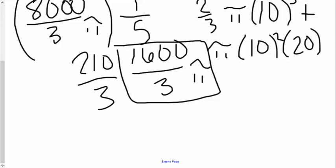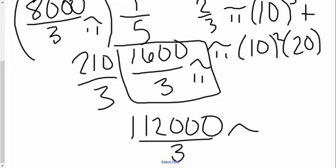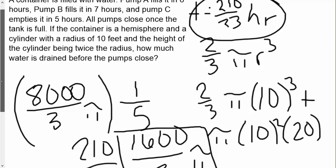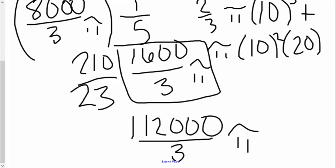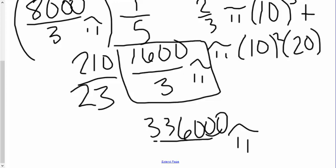So that gives us, one second, being horrible. That's one thousand two hundred over three pi. Right? Did I do that right? Oh no, I missed the twenty-three. Sorry, sorry, sorry. So this should be two thousand one hundred times sixteen hundred, and all of that over sixty-nine. So this is going to give us three hundred and thirty-six thousand over sixty-nine pi.